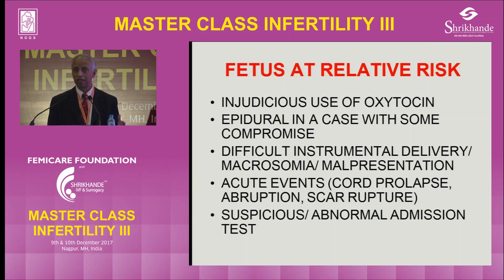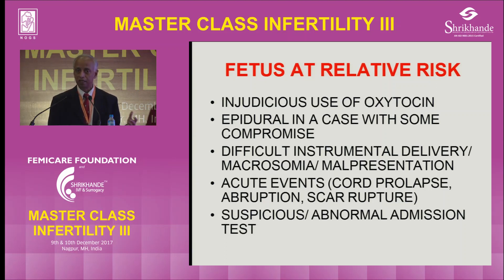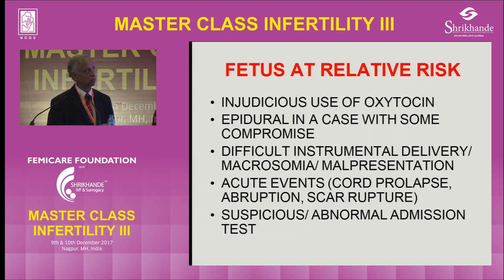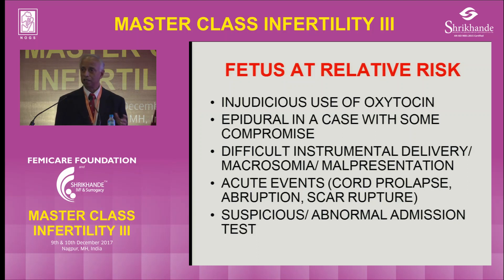65% of cases in medical litigation are linked to oxytocin in America; it has been classified as a class B drug. Used at the wrong dose at the wrong time, it can cause problems. The second issue is epidural: in cases with some compromise, epidural is a useful option for pain relief in early labor and is much easier to give when the mother is stable.